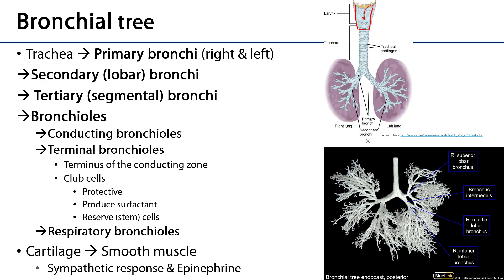The trachea is the trunk of the bronchial tree. It is comprised of numerous — generally about 13 — C-shaped hyaline cartilage rings. It's incomplete in the posterior, where there's a little smooth musculature called the trachealis. The trachea then bifurcates into the primary bronchi.